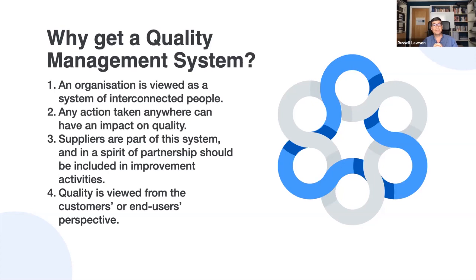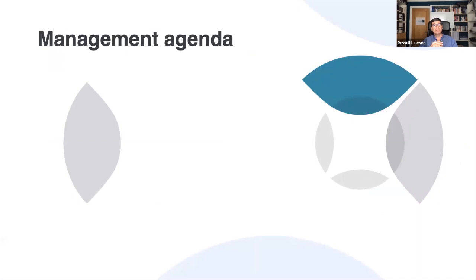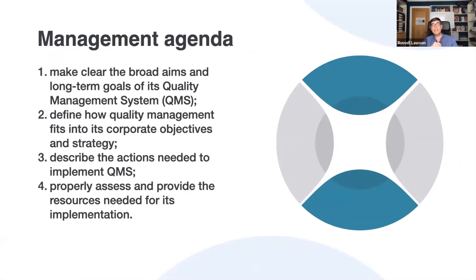This leaves no place for turf wars. Quality management simply can't work within an atmosphere of 'them and us.' Quality should always be at the top of the management agenda and requires leadership from the very top. Senior managers' lack of commitment is actually recognized as the most significant barrier to successful implementation. Senior managers need to develop a quality strategy that makes clear the broad aims and long-term goals of the QMS, defines how quality management fits into corporate objectives, describes the actions needed to implement it, and properly assesses and provides the resources needed.